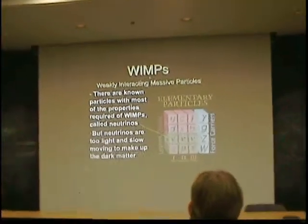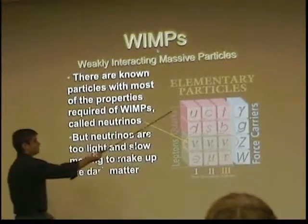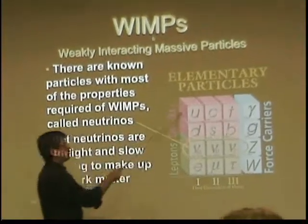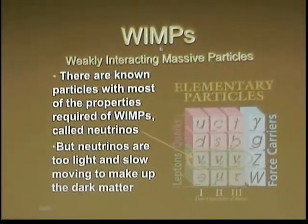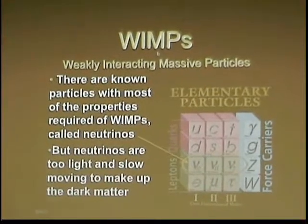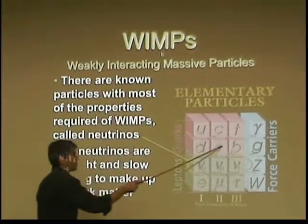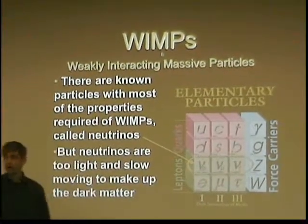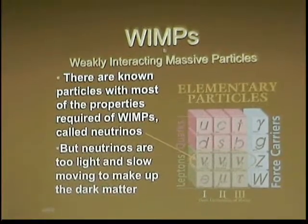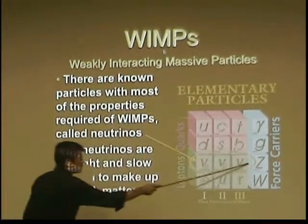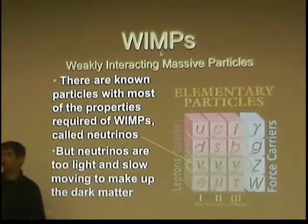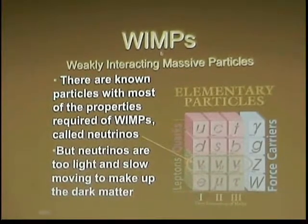Here is a chart of what's known as the standard model of particle physics. These are all of the particles we know to exist in our universe. That standard model includes six types of particles known as quarks, six types of particles known as leptons, and then four bosons, which are the particles that create force.